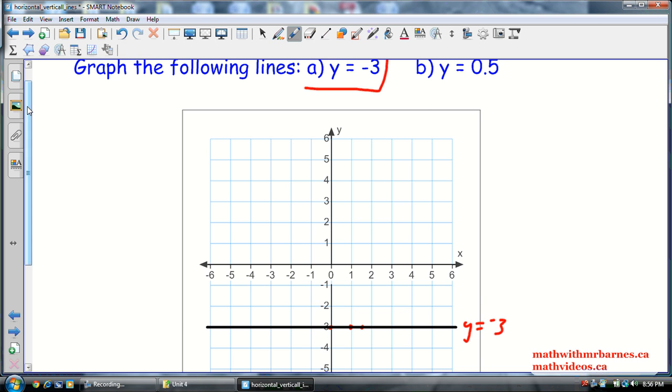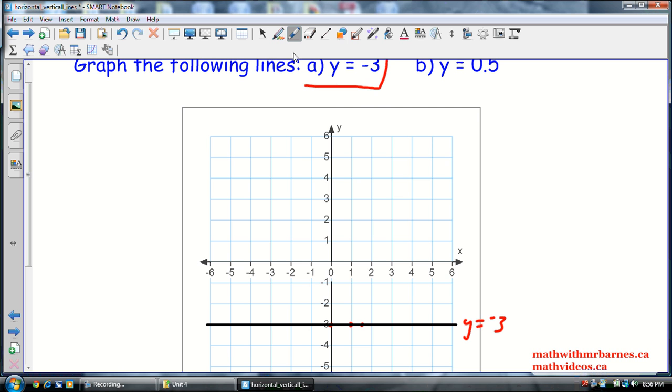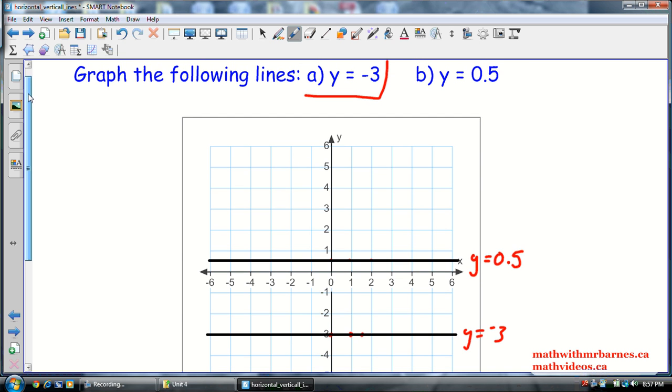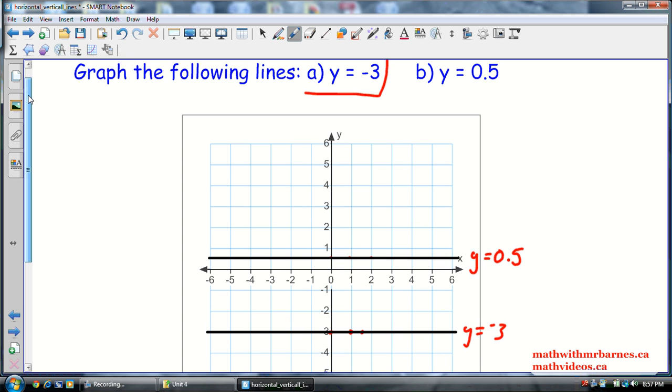Now we got y is equal to 0.5 or half, and don't let the 0.5 fool you. 0.5 is just in between here. So all along these points right here, y is equal to 0.5, so right across this line here, y is equal to 0.5. So that's the horizontal line. And you see guys, nothing overly complicated there. You just got to keep that straight in your mind that for a horizontal line, y is equal to whatever number it's going through. In this case 0.5, this case negative 3. And all you got to do is look on the axis for that, the y axis.